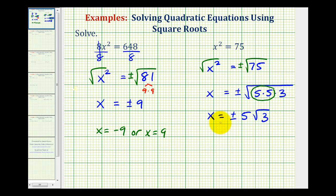So we have x equals plus or minus 5 square root of 3. Or if we want, x equals negative 5 square root of 3, or x equals positive 5 square root of 3. I hope you found these two examples helpful.